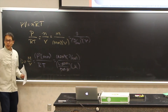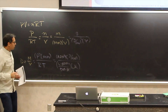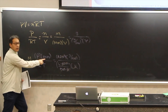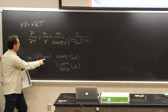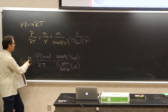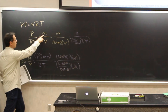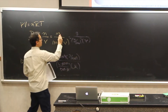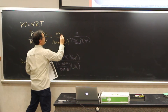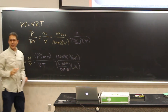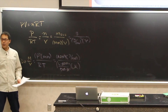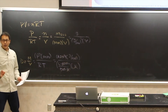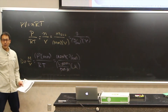A student asks what the lowercase m at the top is supposed to represent. The answer: that's mass. There are too many m's — just mass.